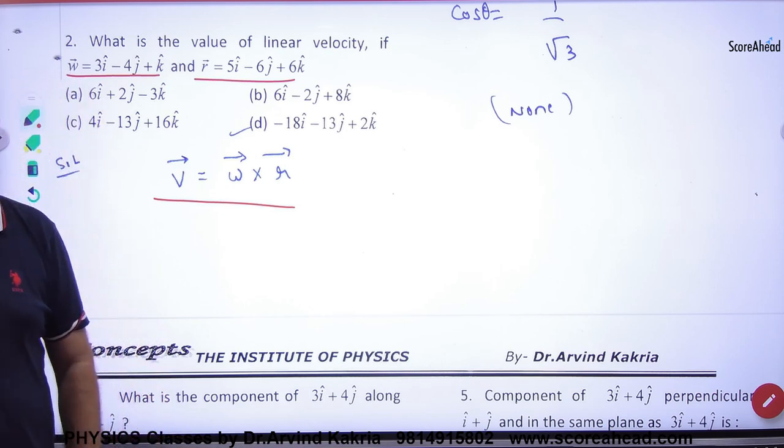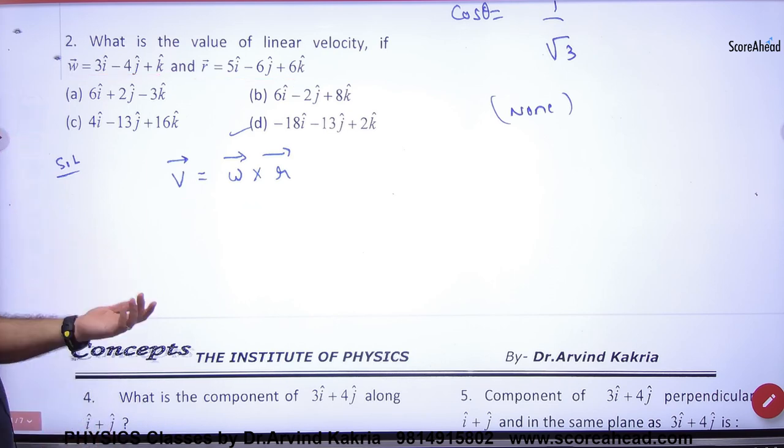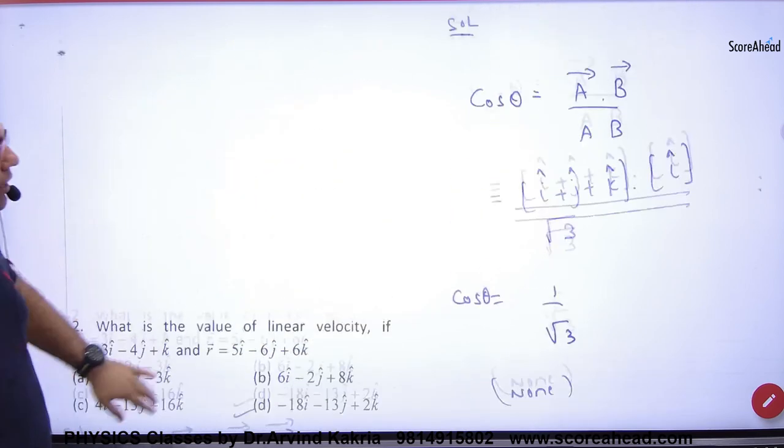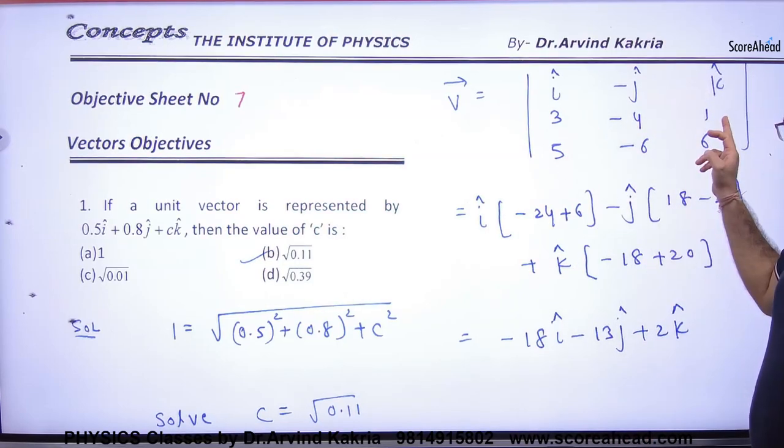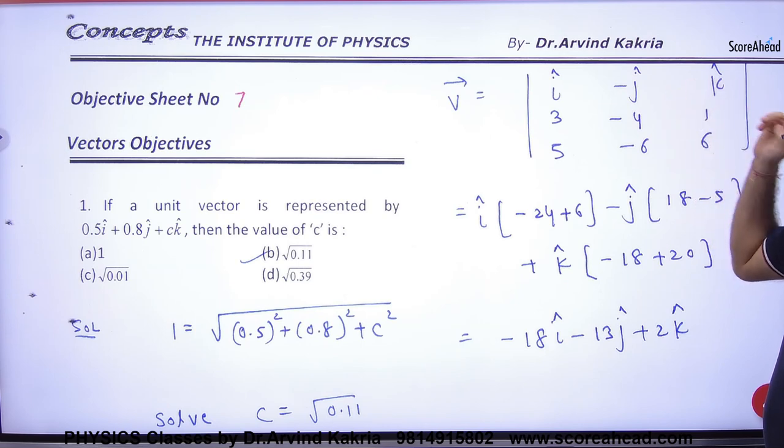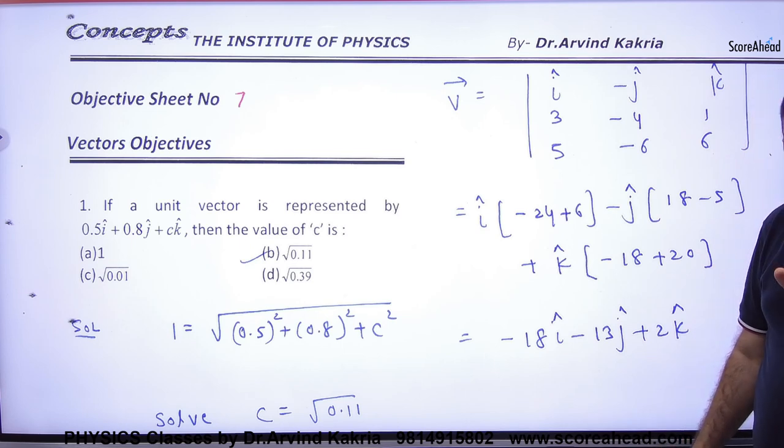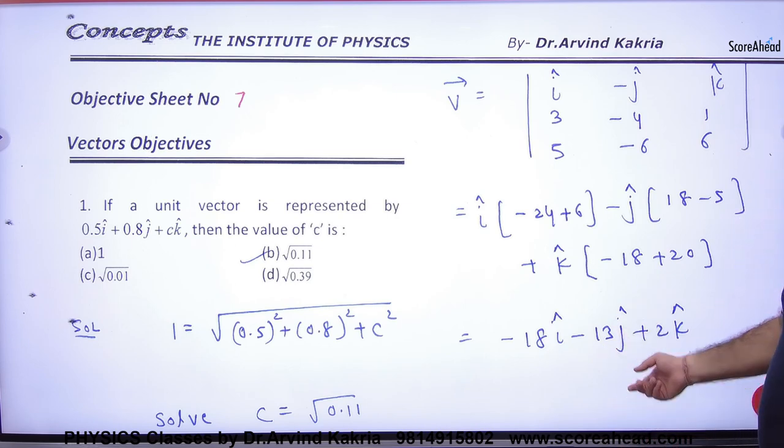In the chapter of physics, V vector is always equal to omega vector cross R vector. Please note this formula. When you do it, you will have to do it. If you have to use this formula, then you will not do anything. Omega vector is given, R vector is given. What will you have to do? Cross product. And you will know these are omega coefficients, these are R coefficients. I cap, minus J cap, K cap. Answer. I will share it on Google Drive. The main thing was what should we do? Omega cross R.